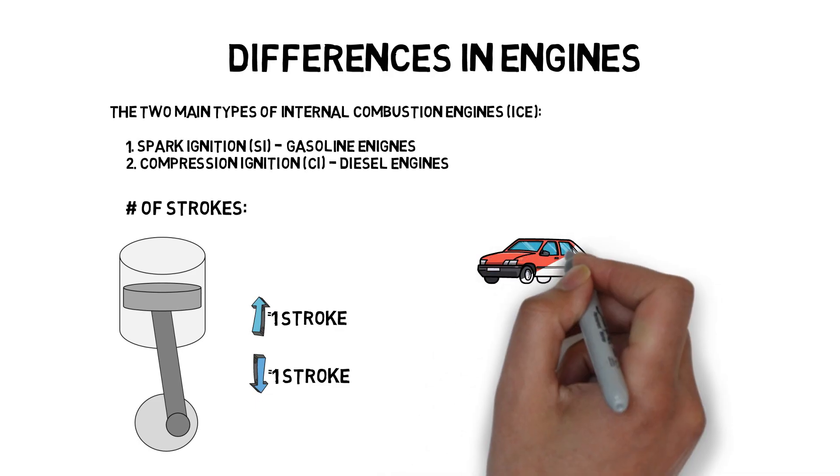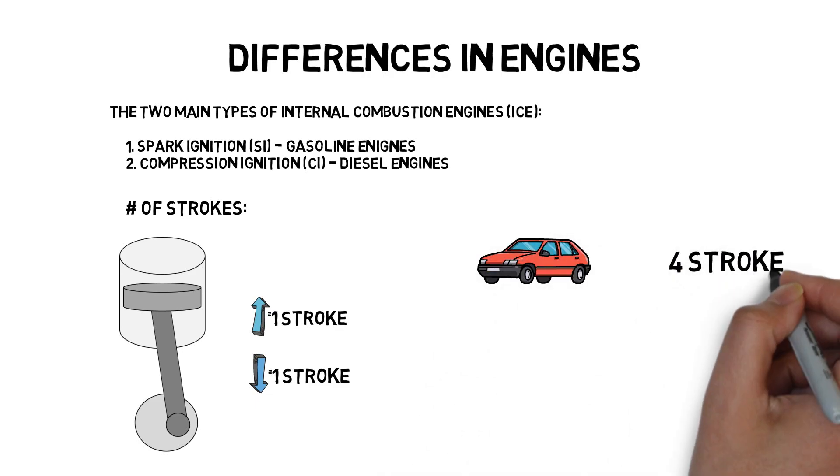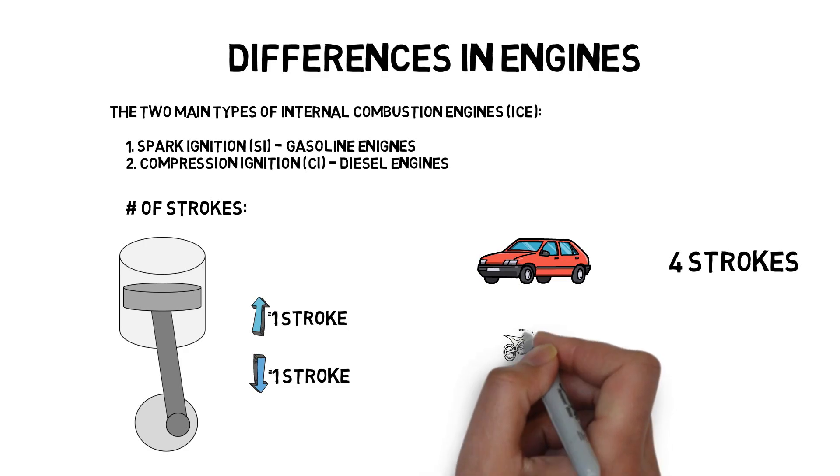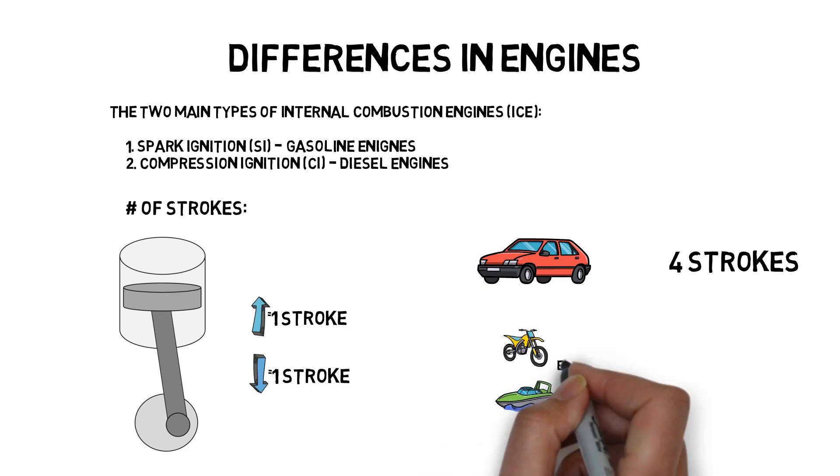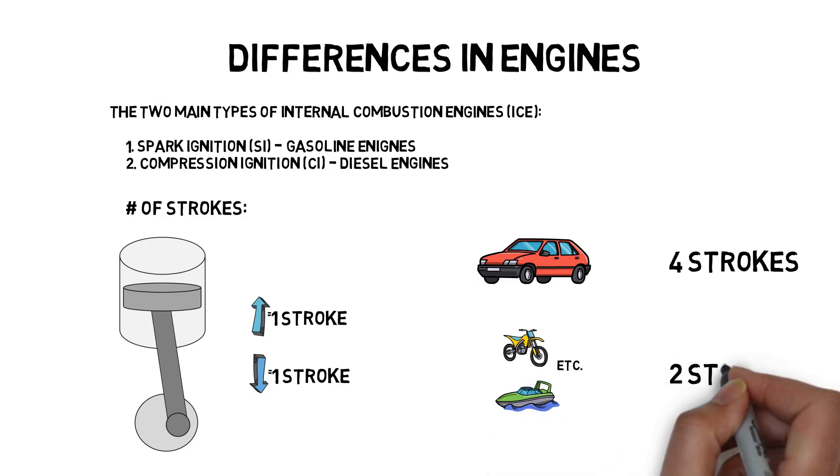Most automobiles use four-stroke engines, but there are a few machines such as motorcycles, lawnmowers, chainsaws, and motor boats that benefit from the use of two-stroke engines.